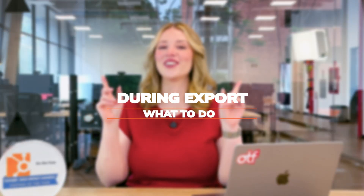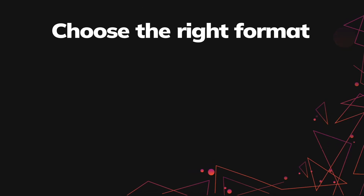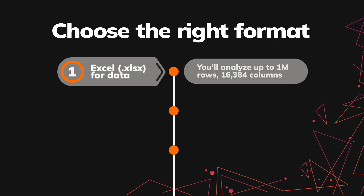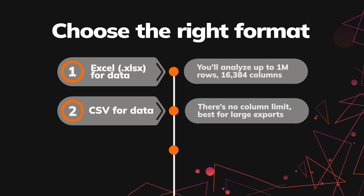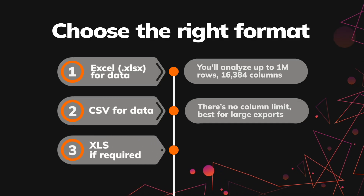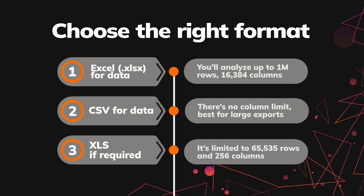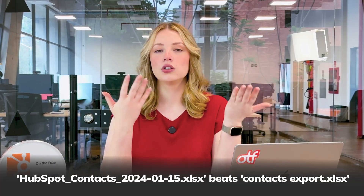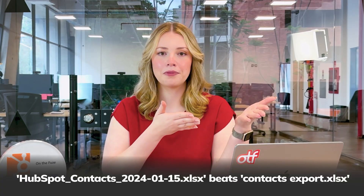Once you've prepped your data and you're ready to export, here is what to keep in mind. First, choose the right format. Excel is for data you'll need to analyze — up to 1 million rows and 16,384 columns. CSV is for data going into other systems — no column limit, best for large exports. XLS is only if required, with a limit of 65,535 rows and 256 columns. Second, use consistent naming conventions. If you're doing this monthly, use the same file naming pattern — something like HubSpot_Contacts_2024-0115 beats a random file name when you're searching through past exported data.